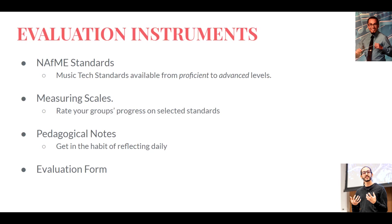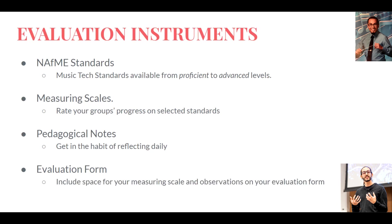We developed an evaluation form for each lesson with space to rate and write observations particular to specific classes. We used a one-to-seven scale. If a class rates low on achievement, you can go back to your observations on those low ratings and might see students were disengaged on a certain activity — which tells you that activity needs to change or you need to change your approach to it. If you are careful about taking observations, you will find the reasons why. We'll provide templates for an evaluation form you can use for each lesson.